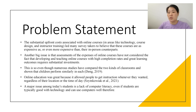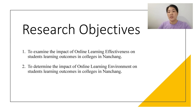Even if students are typically good with technology and can use computers, there are therefore research objectives. One: to examine the impact of online learning effectiveness on students' learning outcomes in Nanchang. Two: to determine the impact of the online learning environment on students' learning outcomes in college in Nanchang.